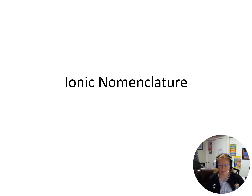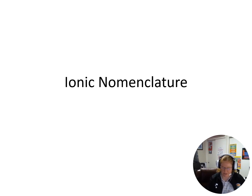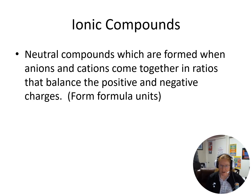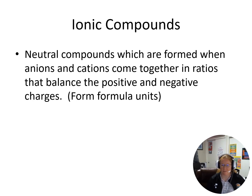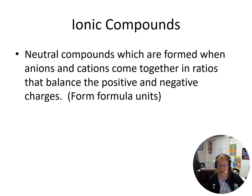As we talk about more compounds, we need to understand how to name things beyond just our covalent compounds. Previously we talked about covalent nomenclature, and now let's take a look at ionic nomenclature. Ionic compounds are neutral compounds formed when an anion and a cation come together in a ratio that balances out those positive and negative charges. So ionic compounds are neutral, and we have to charge balance to zero.